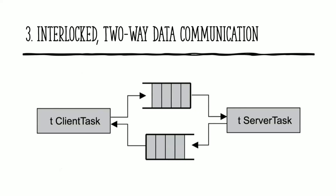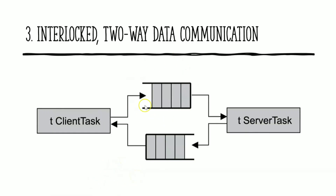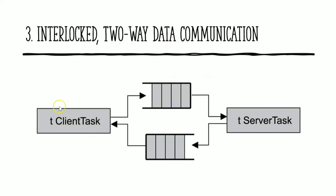Interlocked two-way data communication uses two message queues. The client task sends data to the request queue, the server task receives it, and then sends an acknowledgement back to the client task through a second message queue. Pseudo code: client task — send message to the request queue, wait for message from server; server task — receive message from the request queue, send message to the client queue. Two-way communication happens through both paths.